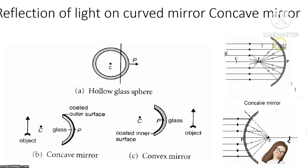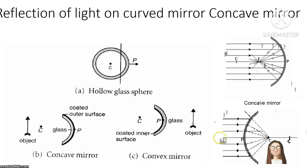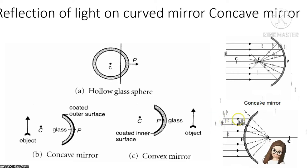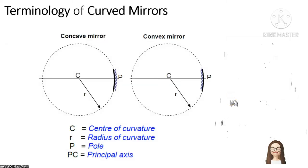Light rays hitting the reflecting surface will focus at a point which we call the focal point. As you can see, the convex mirror has the reflecting surface on the outside. When light rays hit the surface, it appears to focus at a point behind the mirror, and all the rays will be diverged.